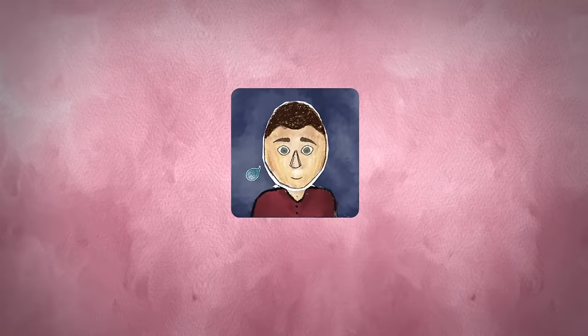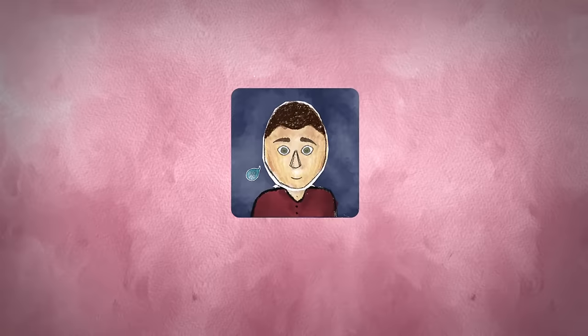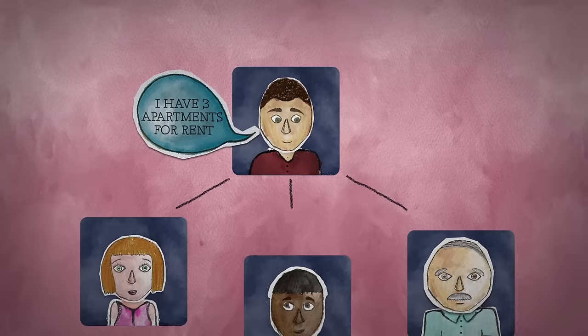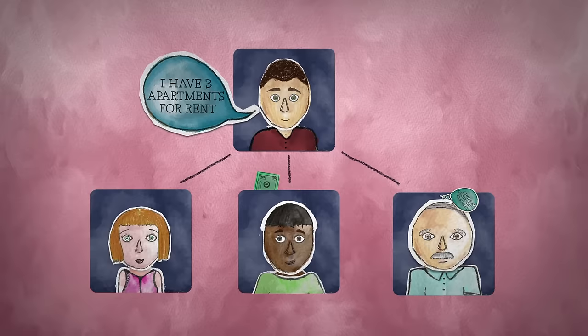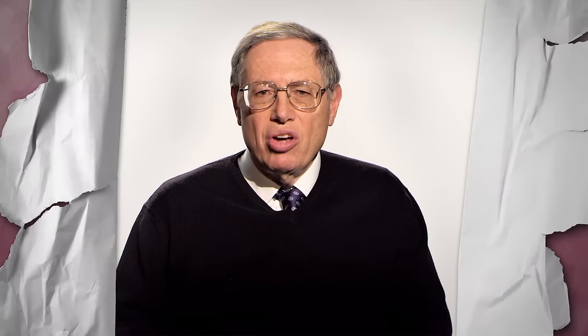The same thing happens today in connection with leases. Somebody owns a piece of property and they lease some fraction of it to a person. That person now has two choices: they can sublease some fraction of it to a third person and continue it on down, or they can assign their interest to somebody else.